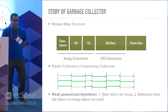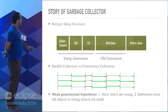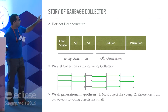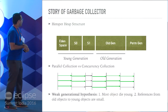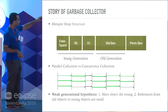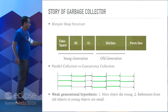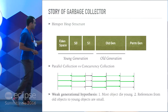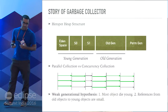Before going into the details of GC, I will show you a very evergreen picture of the Java heap structure. Why that heap structure came into the picture is the last point — we have something called the weak generational hypothesis. And as I have mentioned, this is a hypothesis.